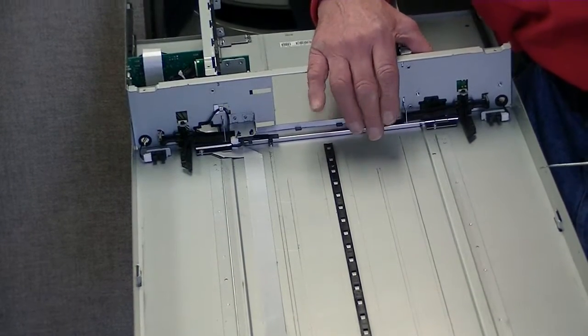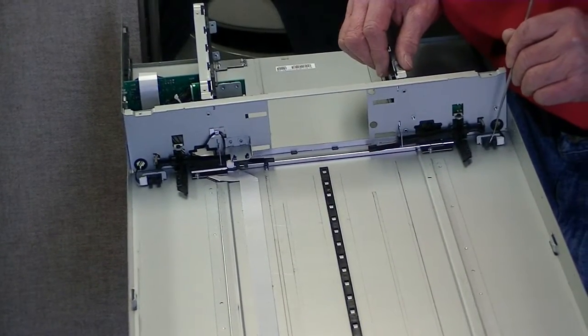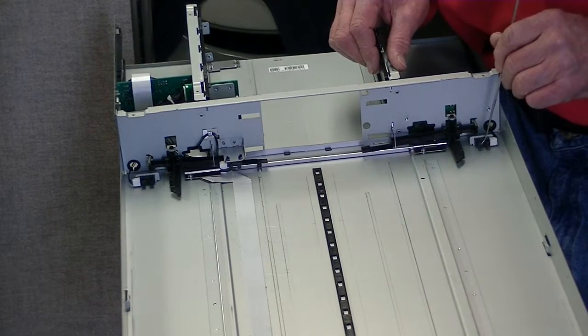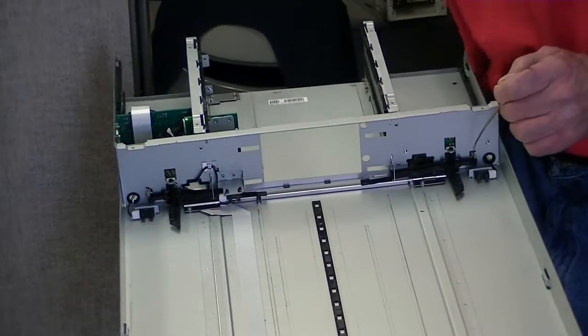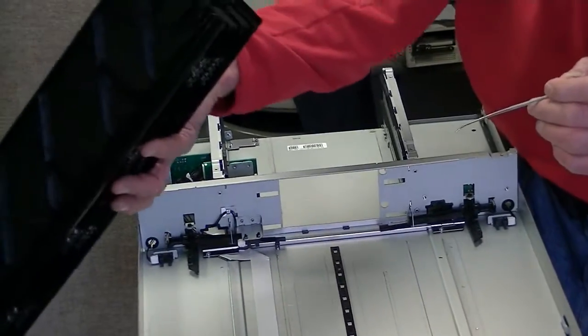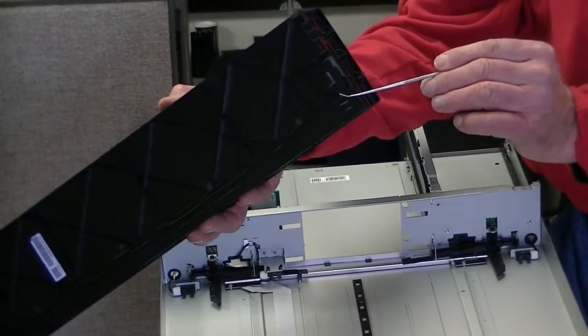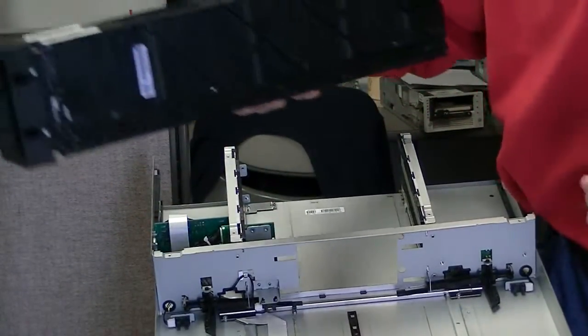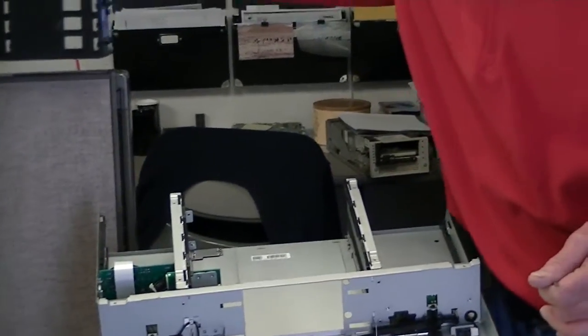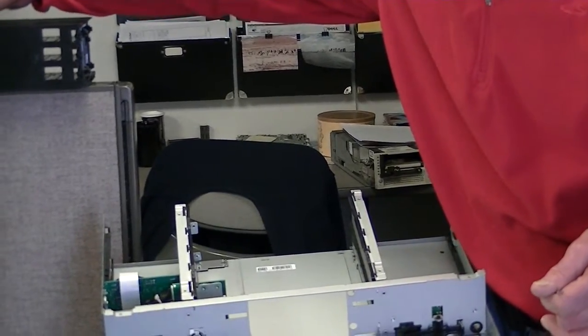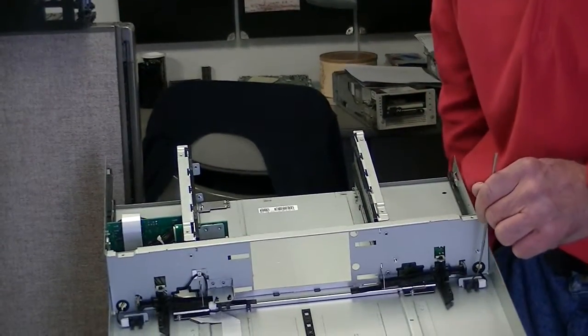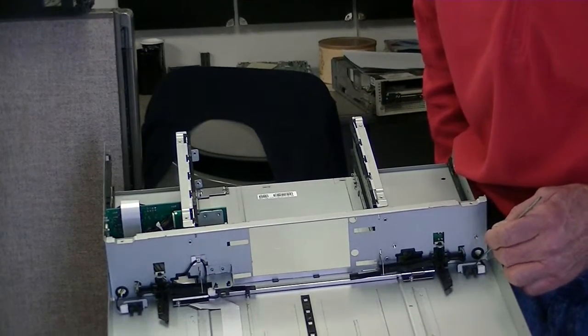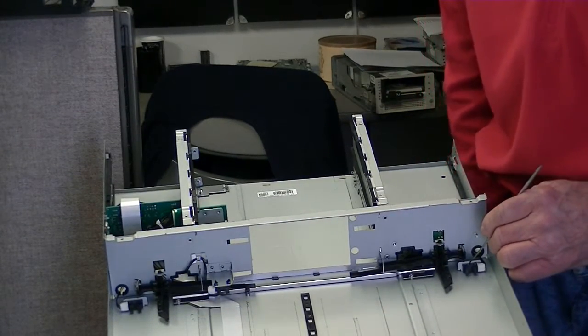Now the other thing that we're highly suspicious of is this opto sensor back here. All this thing does is shoot out a beam of light and when this particular tab is in there it breaks the beam and says okay there's a magazine in there. If it's not there it says please insert your magazine. This is relatively easy to replace too, it's just a connector here that goes on in the back this way.